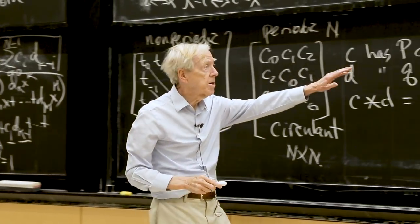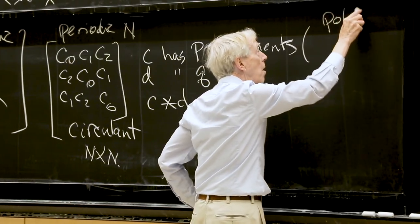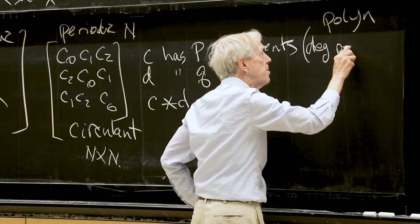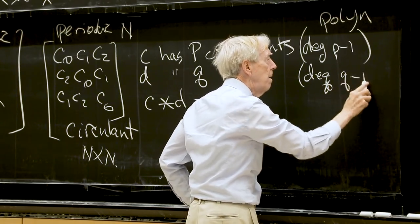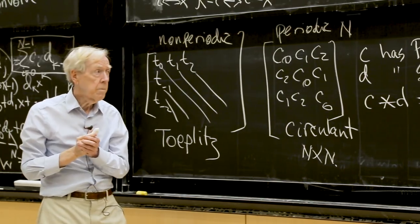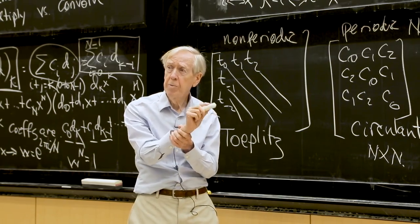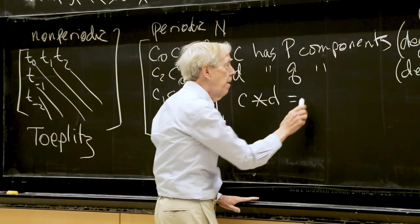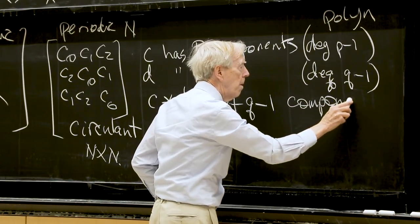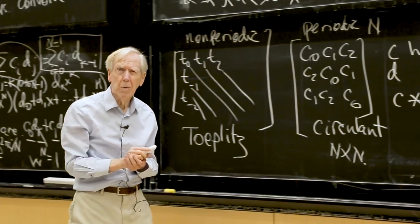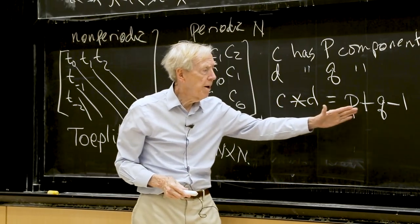Should I write that question down? Because that brings out the difference here. Yeah, so if I have p, if c has p components, d has q components, then the convolution of c and d has how many? OK, so I'm multiplying. So it's really this corresponds to a polynomial of degree p-1, right? Polynomials of degree p-1. And this guy would be degree q-1, degree q-1. And when I multiply them, what's the degree? Just add. And how many coefficients?